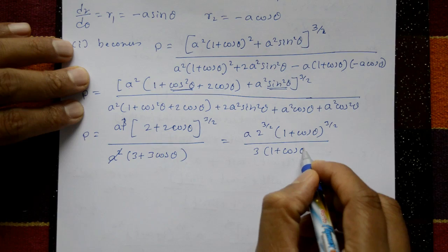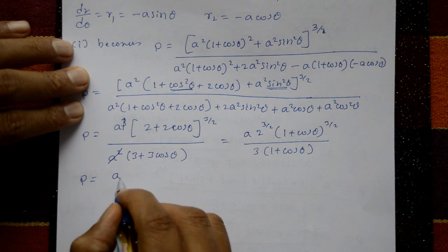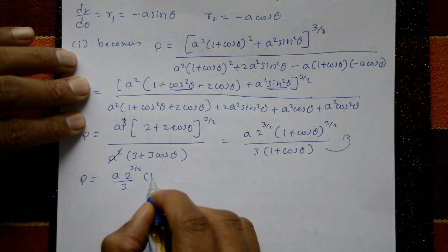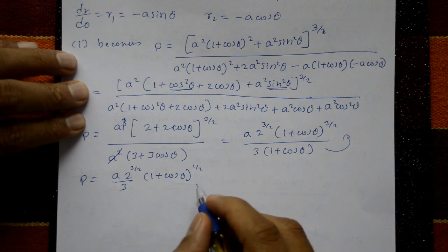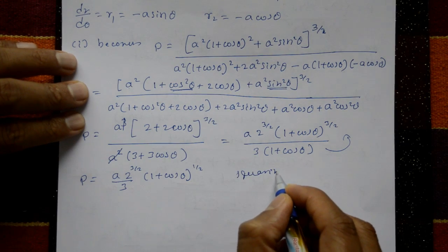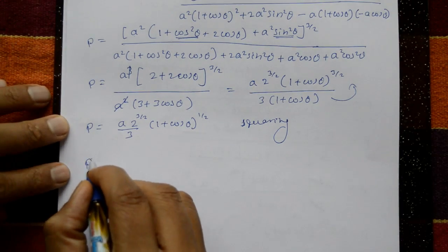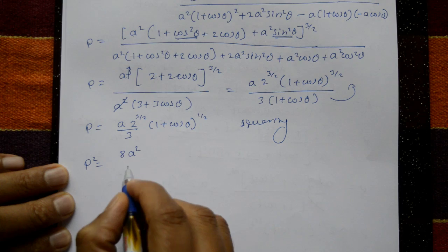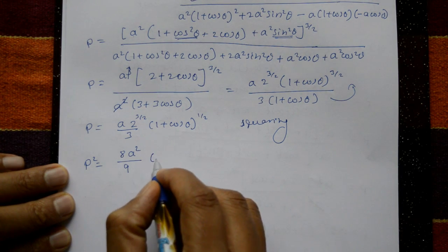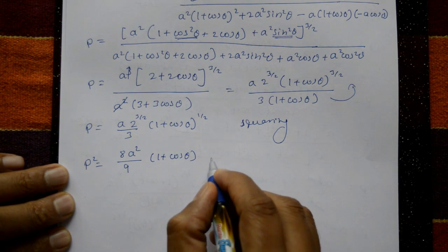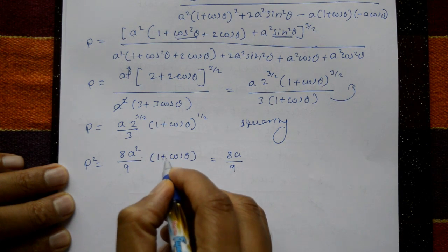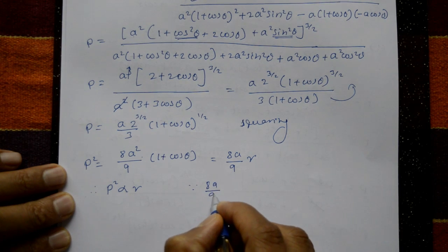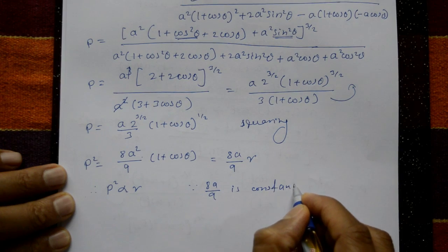Simplifying: ρ = a · 2^(3/2) · (1 + cosθ)^(1/2) / 3. Squaring both sides: ρ² = a² · 8 · (1 + cosθ) / 9 = (8a/9) · a(1 + cosθ) = (8a/9) · r. Therefore ρ² is proportional to r, since 8a/9 is a constant. This is the required result.